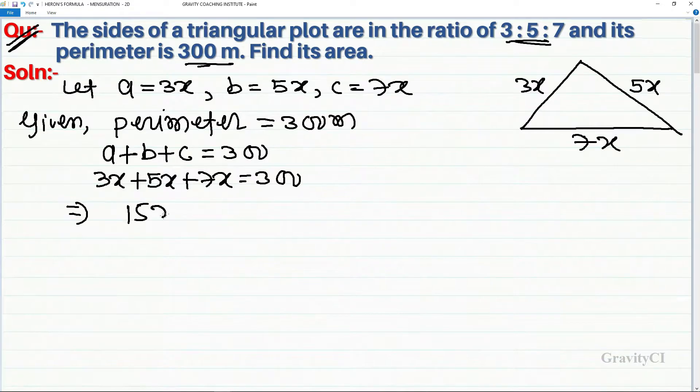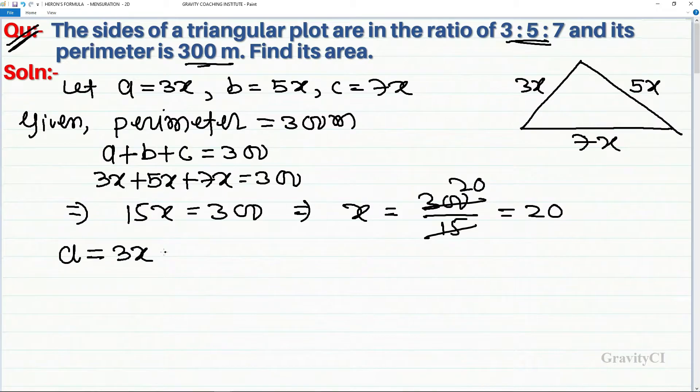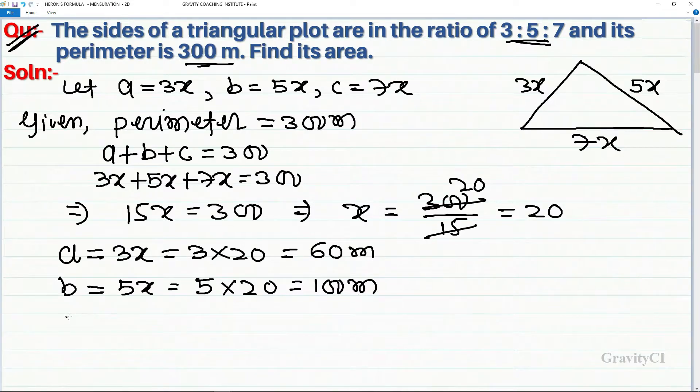So 15x equals 300, therefore x equals 300 divided by 15, which equals 20. So a equals 3x equals 60 meters, b equals 5x equals 100 meters, and c equals 7x.